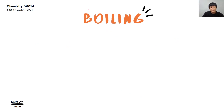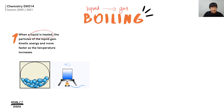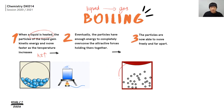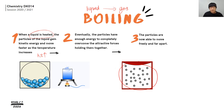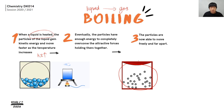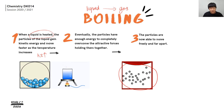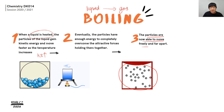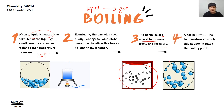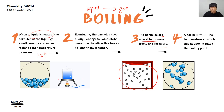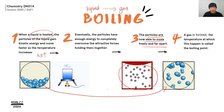Boiling happens when liquid changes to gas, so it is also a heating process. When the liquid is heated, the kinetic energy of the liquid particles increases and they move faster, until they have enough energy to overcome the attractive forces holding them together. When they overcome the attractive forces, the particles move freely and far apart, and gas is formed. This is what happens when you boil water at home.